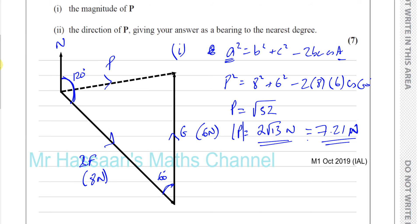Now we need to find the direction of P, giving your answer as a bearing. So basically what we need to do here is we need to find what this angle is. Let me just move that out of the way for a second. We know 120 is the whole thing. And we need to find what this part is. Okay, this is what we need to find. Okay, this is what we're trying to find.